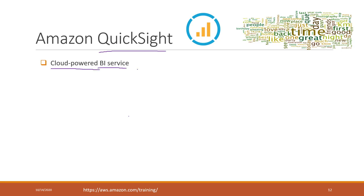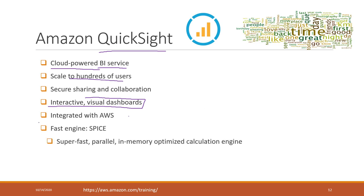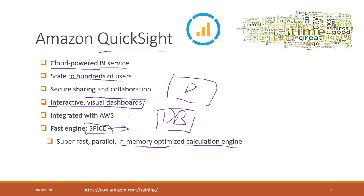QuickSight is a cloud-powered BI service, so everything you need is just a browser and a QuickSight account. It scales to hundreds of users because it's cloud-based. They claim it is secure for sharing and collaboration, and it is a highly interactive visual dashboard. It can be integrated with most AWS services and data resources. One thing I want to highly emphasize is called SPICE — the Super-fast Parallel In-memory Calculation Engine.